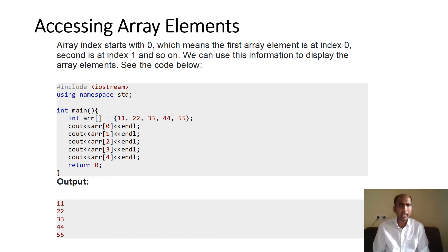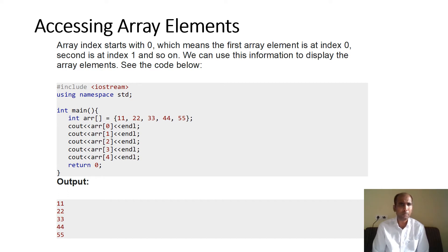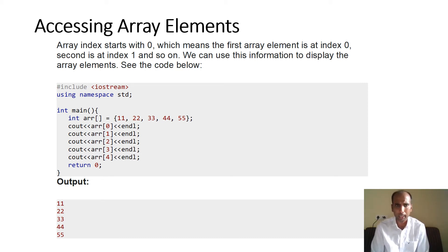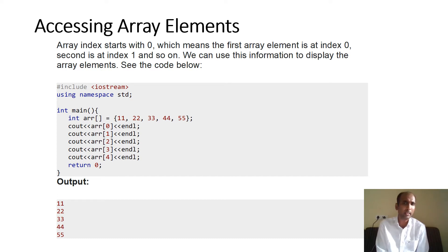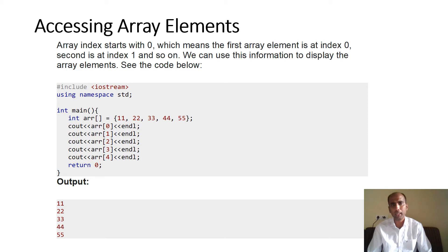How to display array elements? That is very simple. I have taken an array of 5 size with elements 11, 22, 33, 44, 55. You can display them using cout arr[0], cout arr[1], cout arr[2], cout arr[3], and cout arr[4]. Many of you will remember that in C, you used a loop to display array elements — yes, of course, you can use loops in C++ also.